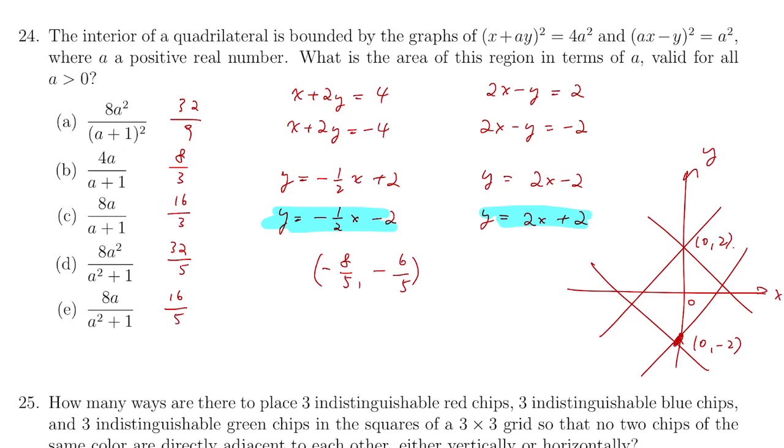Now for the length, it will become 8 over 5 times root 5. Or for the width, it's 4 over 5 times root 5. Multiplying is 32 over 5. And it fits option D. So this is the answer.